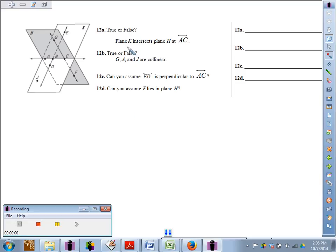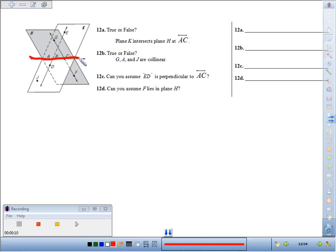Number 12: true or false, plane K intersects plane H at line AC. K and H, line AC—true.